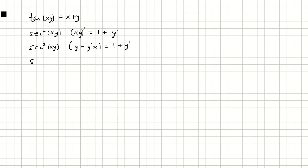Now I'm going to distribute the y plus y prime x with the secant squared. That's going to be y times secant squared xy, plus y prime x secant squared xy, equals 1 plus y prime.